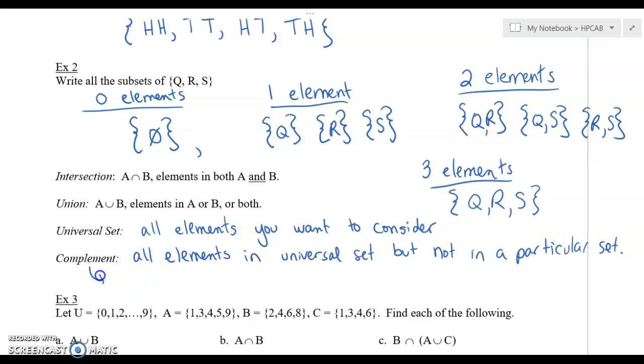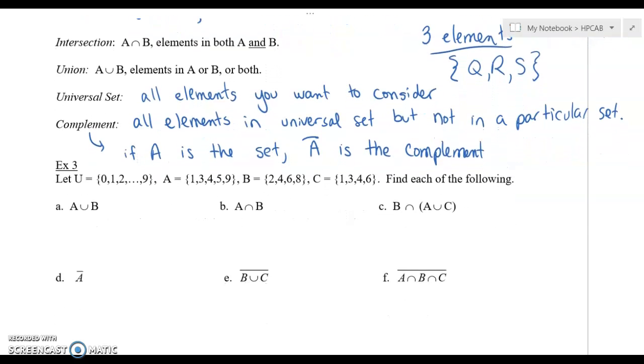So for example, if A is the set, this little symbol means not A is the complement. That means the complement of A. It's basically stuff that wouldn't be in that particular set.